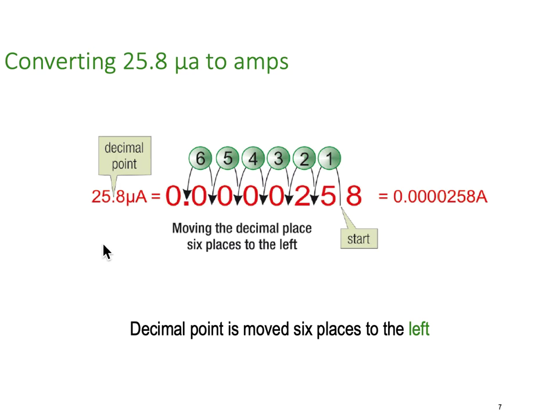So an example moving the other way. We're going to convert 25.8 micro amps. Here's the starting point for our decimal point. But this time we're going to move to the left. We're going to go one, two, three, four, five, and six. So we end up with 0.0000258 amperes, which is what that number is there. But again, it's much easier to say 25.8 micro amps.